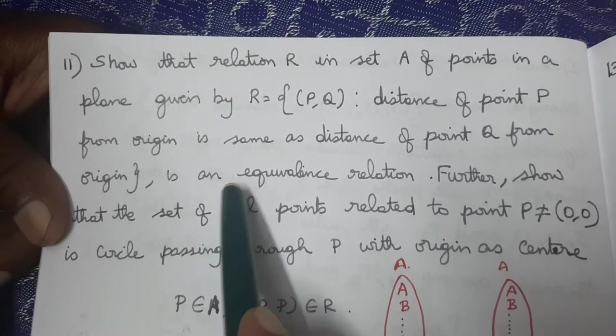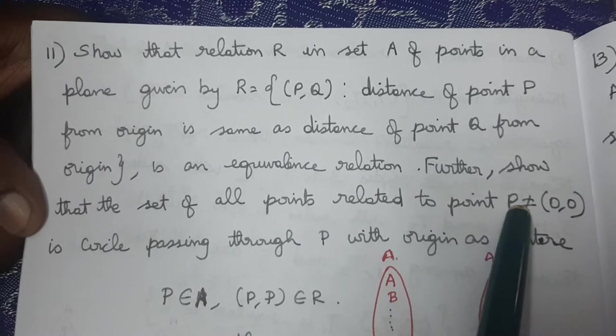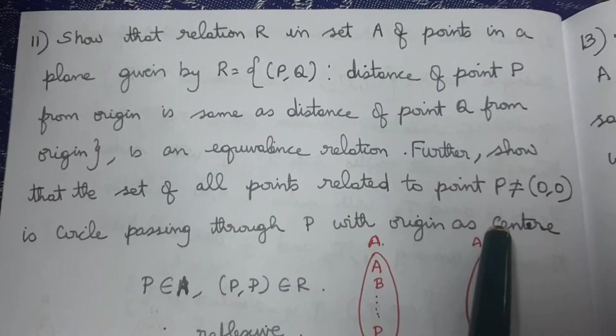Further, show that the set of all points related to the point P, not equal to (0,0), is a circle passing through P with the origin as centre.